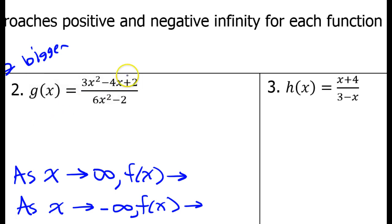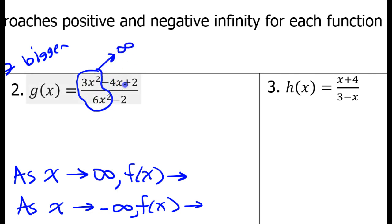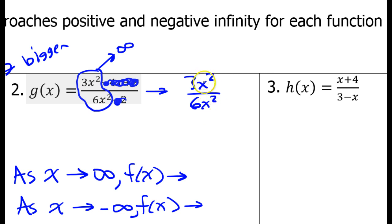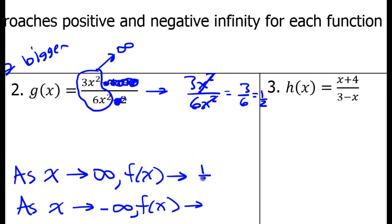Take a look at problem number two. It's all about the terms that have x squared in them. As x approaches positive infinity, these terms are going to approach positive infinity much faster than the other terms, so the other terms are going to become irrelevant very quickly. So eventually the function is going to be approaching whatever 3x squared over 6x squared is. We have x squared over x squared, and since we're approaching infinity we know these are not going to be zero. So the x squared terms will cancel each other out, leaving us approaching 3 over 6, which is 1 half. So the overall value of this function is going to approach 1 half as x approaches positive infinity.